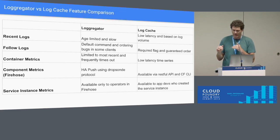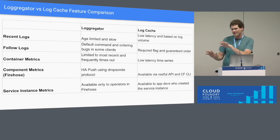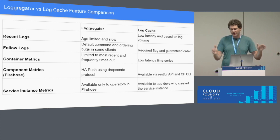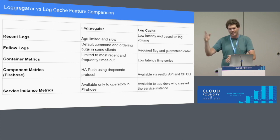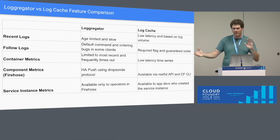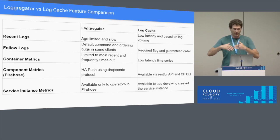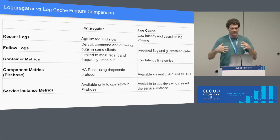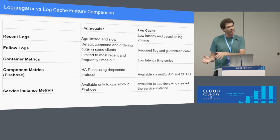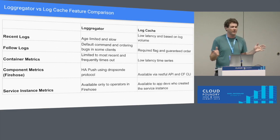Going through those user experiences once more: recent logs is now our first-class experience without any flags. The old Loggregator system was age-limited — once logs got to about an hour old, we just started dropping them. The new LogCache system is based on log volume. If you exceed the buffer of around 10,000 logs, we'll start dropping older logs. But this means we provide fair sharing whether your app is really noisy or slow at emitting logs — we treat all apps the same.